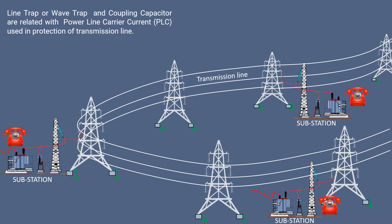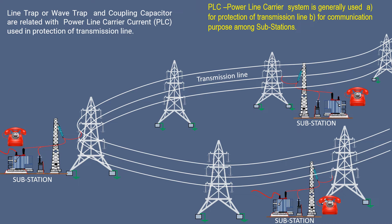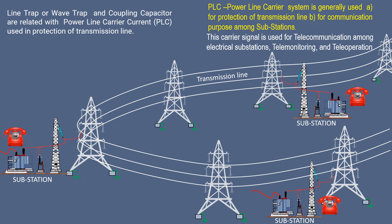Line trap or wave trap and coupling capacitor are related with Power Line Carrier Current (PLCC), used in protection of transmission lines. The PLCC power line carrier system is generally used for protection of transmission lines and for communication purposes among substations. The carrier signal is used for telecommunication among electrical substations, telemonitoring and teleoperation.